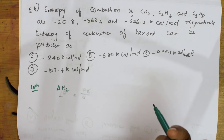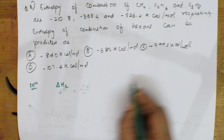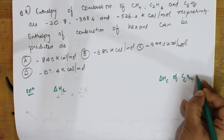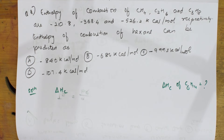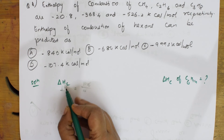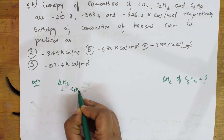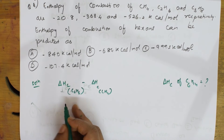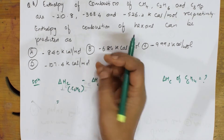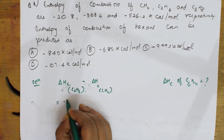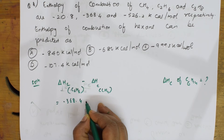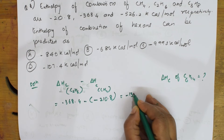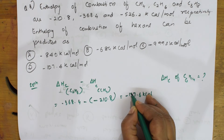Hexane has the formula C₆H₁₄. I need to find the enthalpy of combustion of C₆H₁₄. Step one: take ΔH_c of ethane (C₂H₆) minus ΔH_c of methane: −368.84 minus (−210.8) = −157.6 kcal.